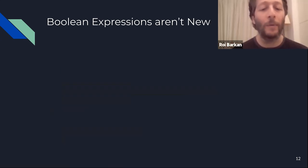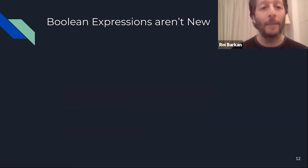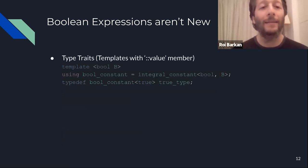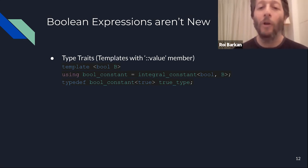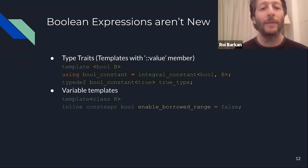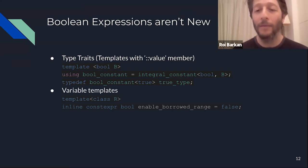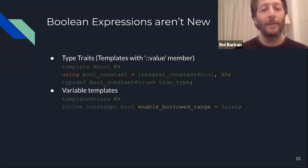Before C++20, we didn't have concepts, but we did have Boolean expressions on types. We already had type traits, and we could use the Boolean constant part of the library that signifies true or false, as well as inline constexpr Boolean variables as ways to convert types into Booleans.